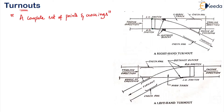If you observe in the figure, there is a right-hand turnout which is turning in the right direction and there is a left-hand turnout which is turning in the left direction. If the set of points and crossings are towards right, it is called a right-hand turnout, and if it is turning out towards left, it is called the left-hand turnout.